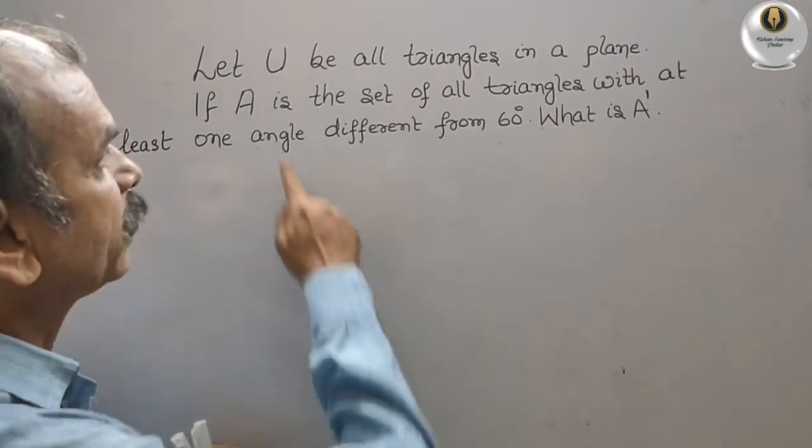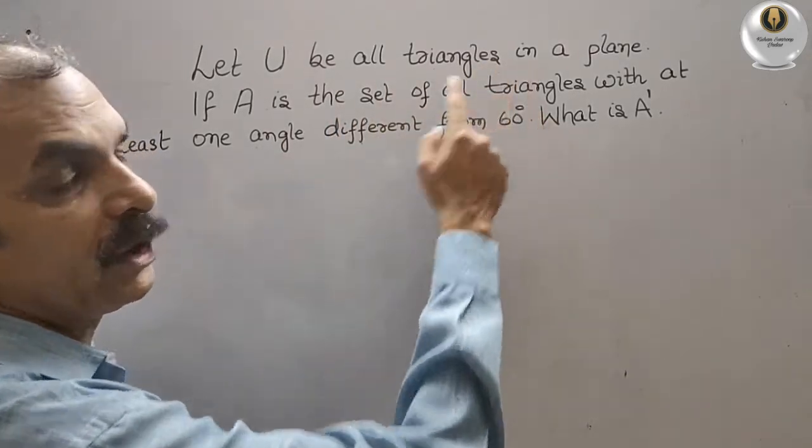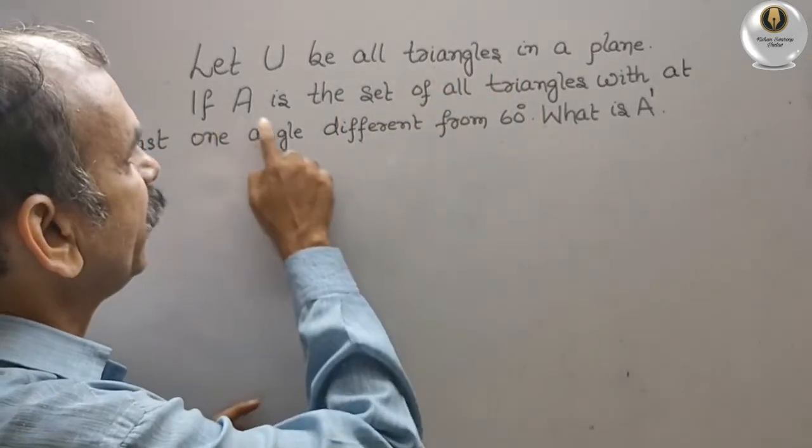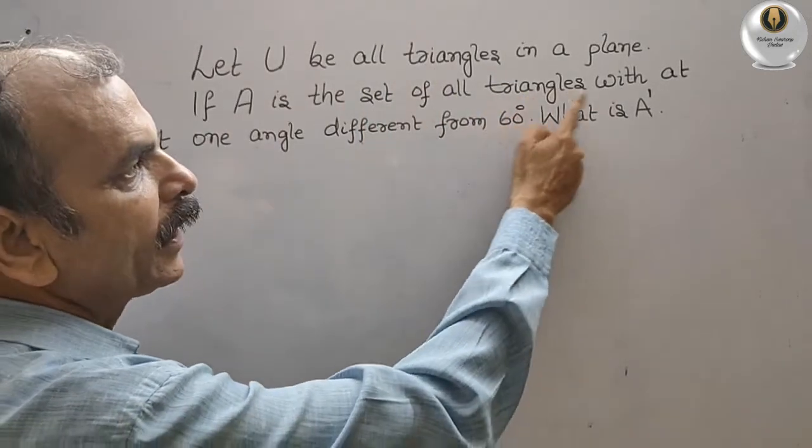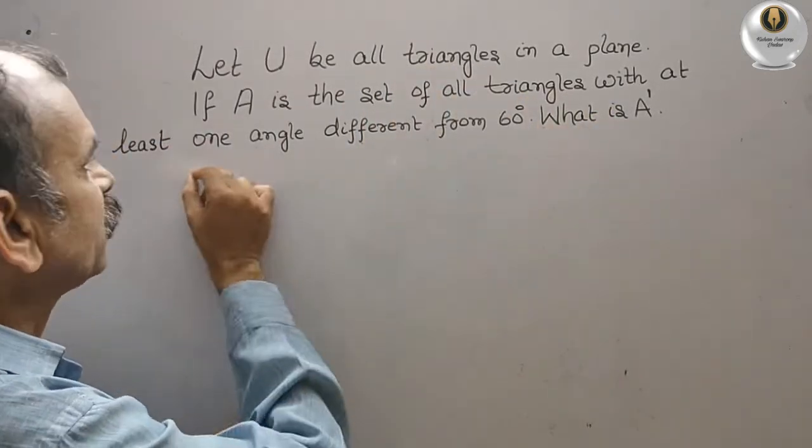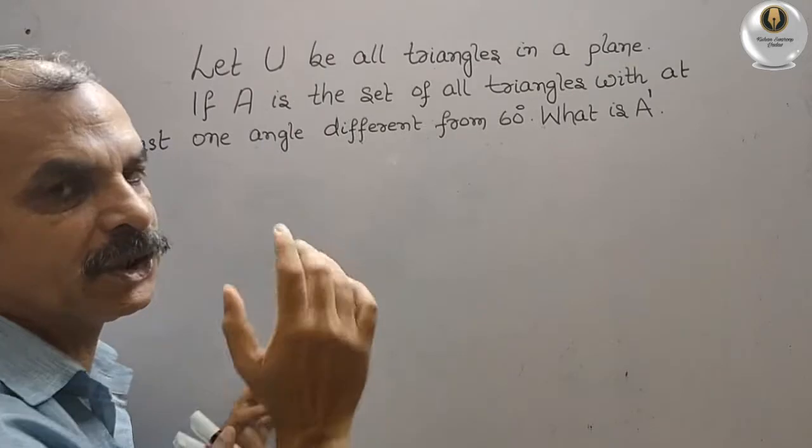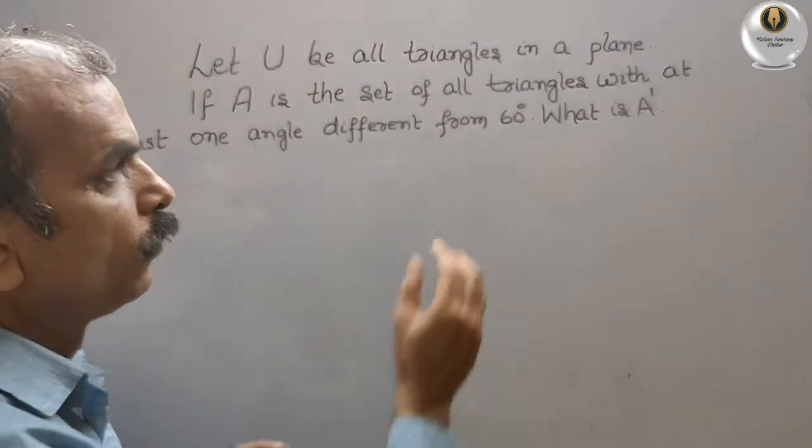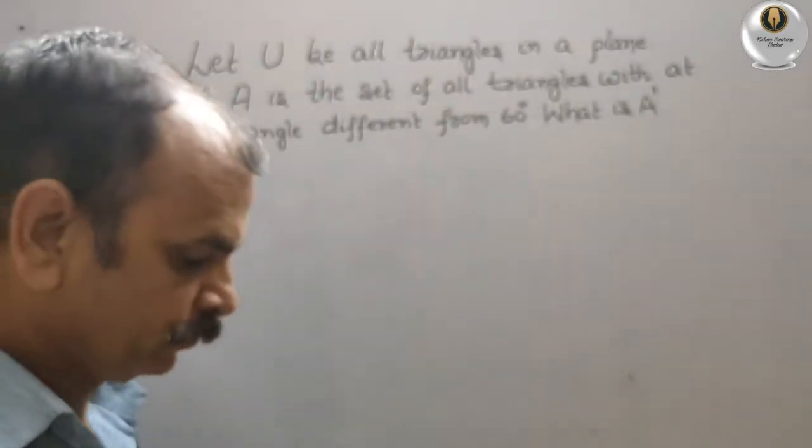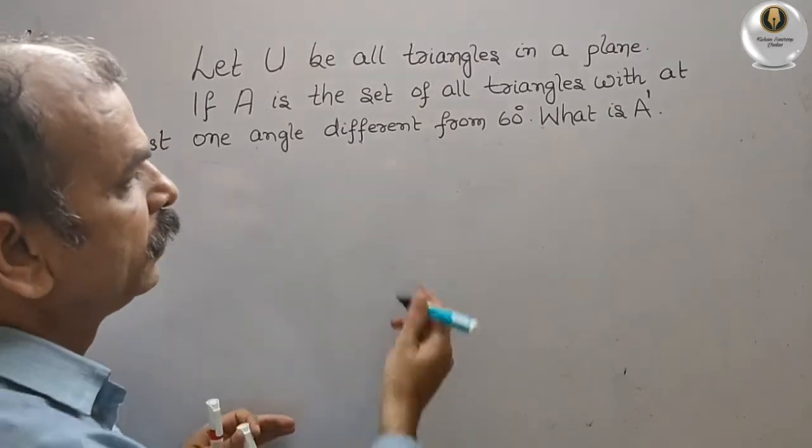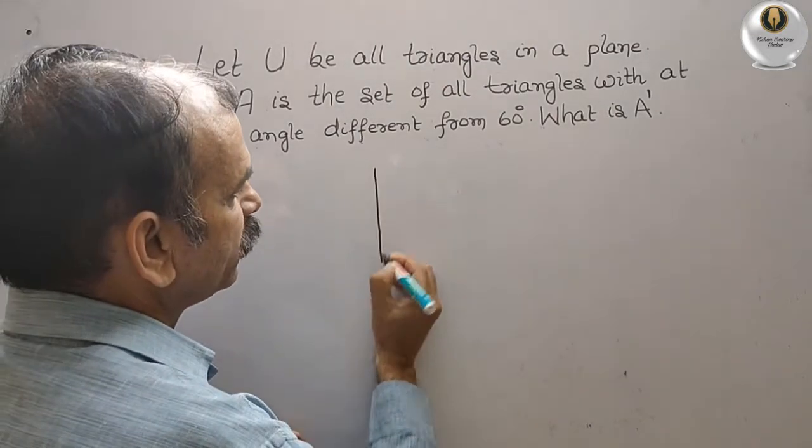Your question is: let U be all triangles in a plane. If A is the set of all triangles with at least one angle different from 60 degrees, what is A dash? Let me help you understand this.